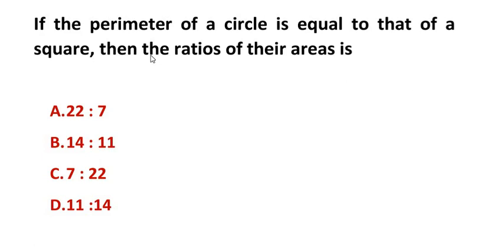Hello and welcome to my channel. In this video we are going to solve an example on geometry: if the perimeter of a circle is equal to that of a square, then the ratio of their areas is?